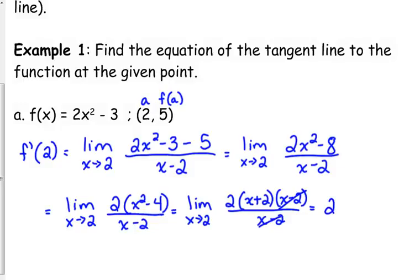And then we can plug in 2 for x. So, we get that f prime of 2, the derivative of f at 2, a.k.a. the slope of the tangent line at 2, is equal to 8.